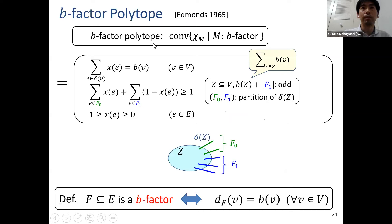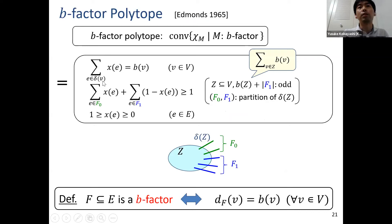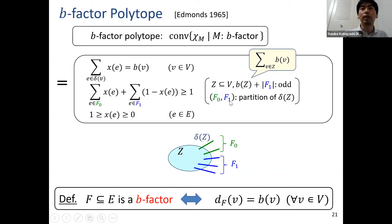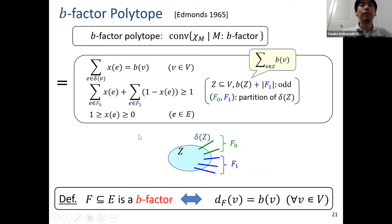As a generalization, the b-factor polytope description is also known. An edge set F is a b-factor if it satisfies degree constraints. The b-factor polytope is described by degree equalities plus inequalities involving vertex sets S and edge partitions of δ(S) into F_0 and F_1, together with 0 ≤ x ≤ 1. So the representation of the b-factor polytope is well understood.